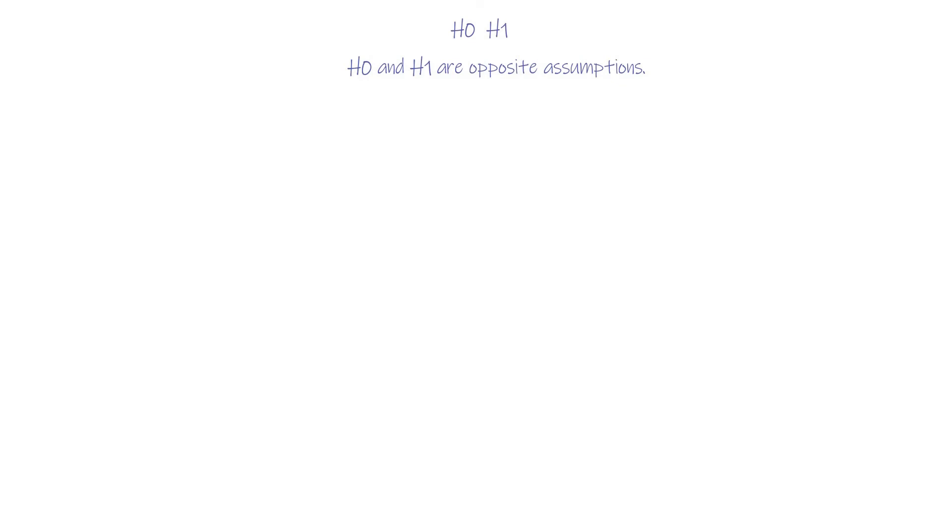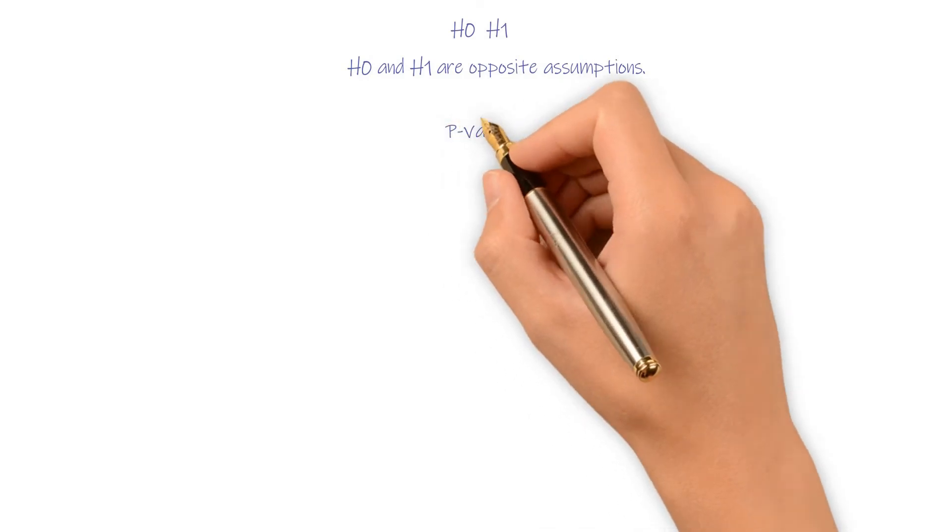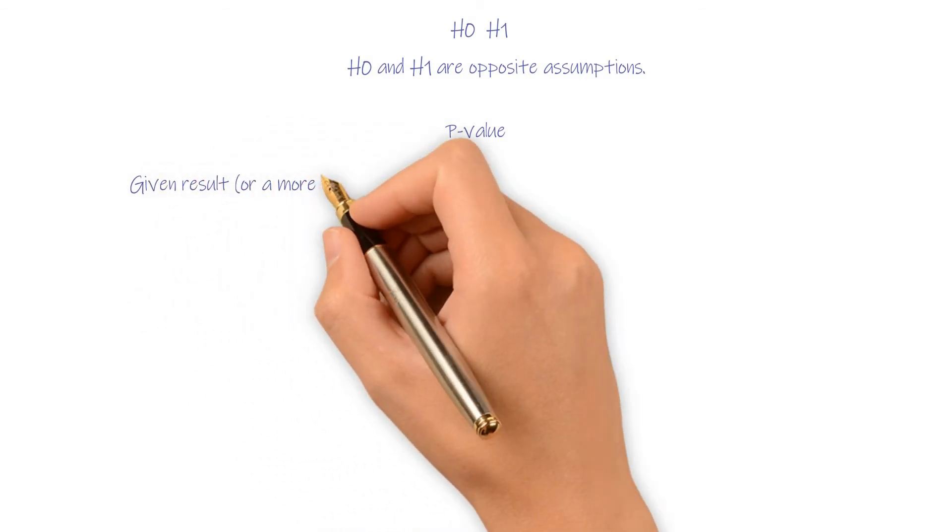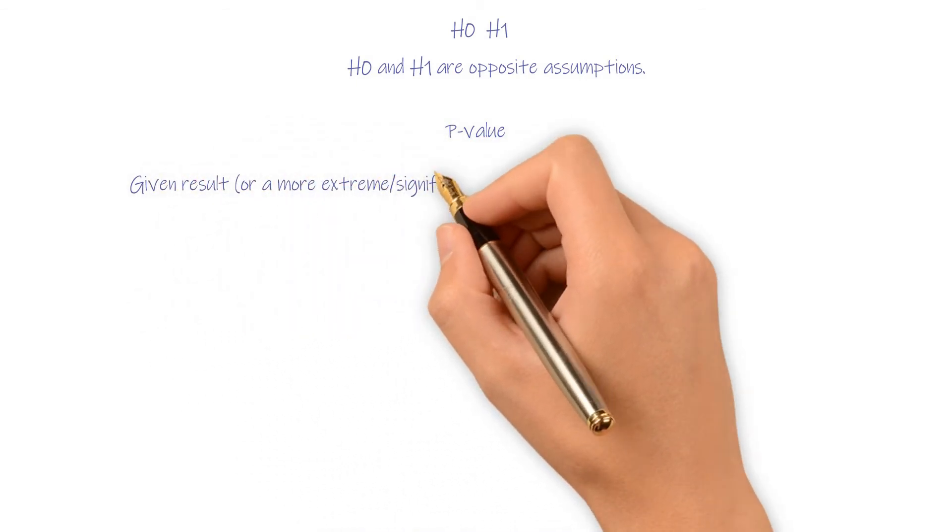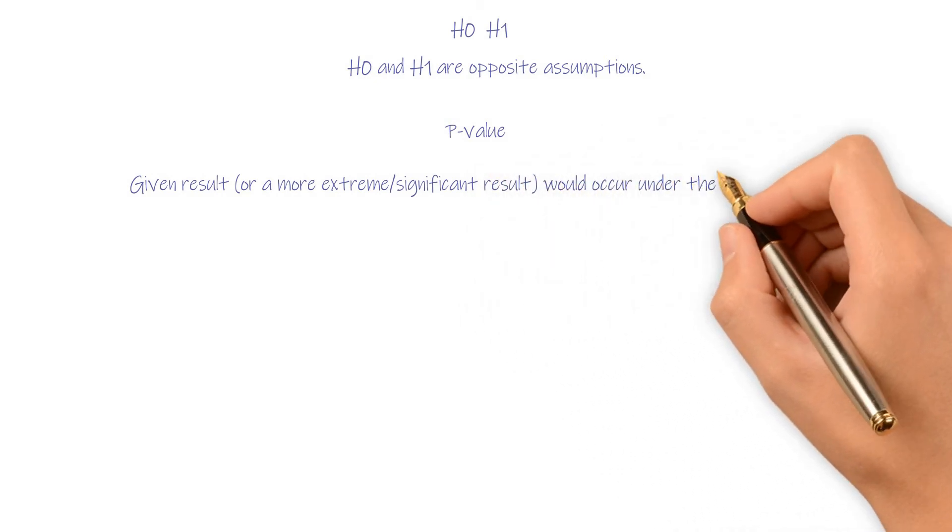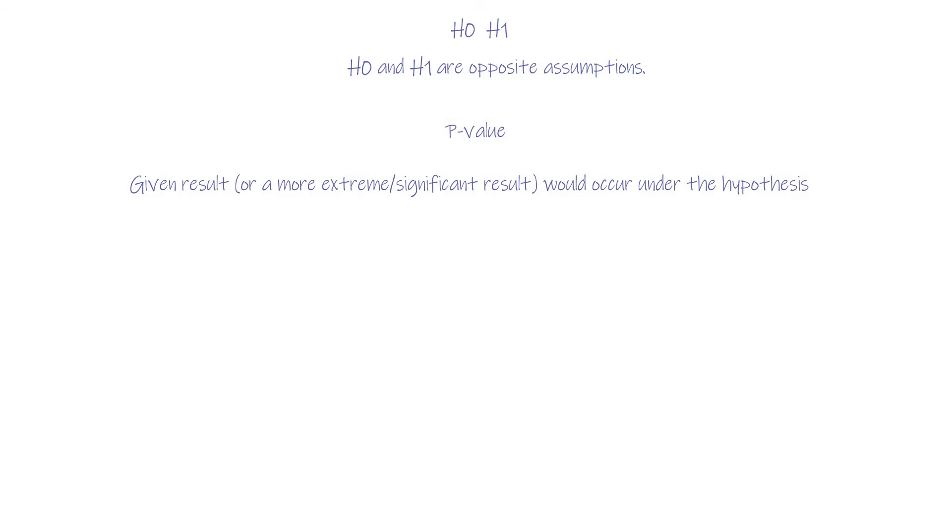P-value: The p-value is the probability that a given result or more extreme significance result would occur under the hypothesis. In our example, the p-value is 1.4%.